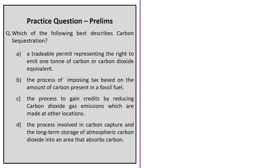The fourth practice question is a definition-based question about carbon sequestration. Option A describes a tradable permit representing the right to emit one ton of carbon or carbon dioxide equivalent. Option B describes the process of imposing tax based on the amount of carbon present in a fossil fuel. Option C describes the process to gain credits by reducing carbon dioxide emissions made at other locations. Option D describes carbon sequestration as the process involved in carbon capture and long-term storage of atmospheric carbon dioxide into an area that absorbs carbon. Option D is the correct answer as it describes the process of carbon sequestration.